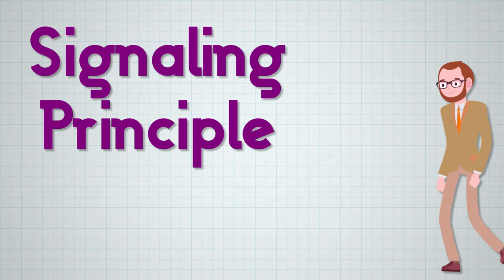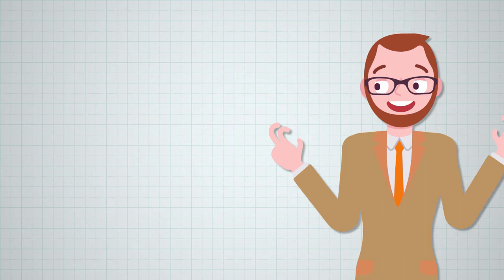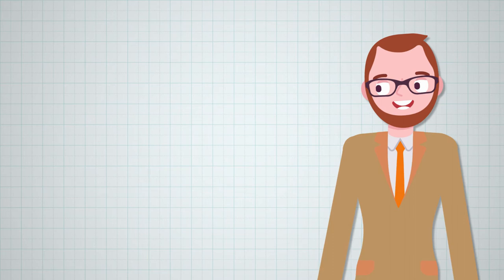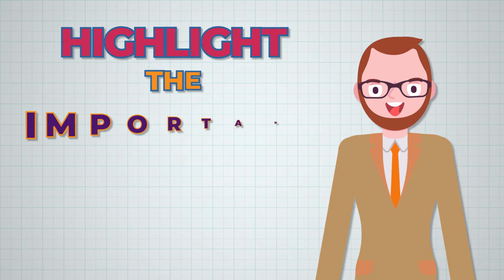The Signaling Principle, as its name implies, is all about signaling to your learners what the important stuff is and providing a visual hierarchy for the information. Or in other words, highlight the important stuff.